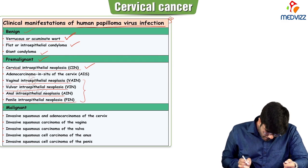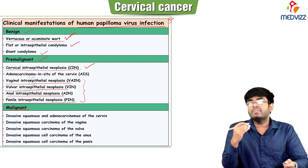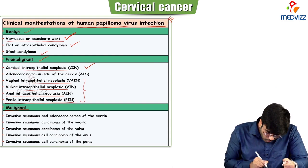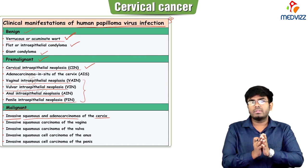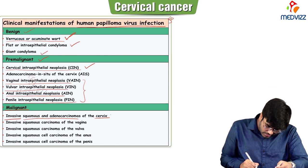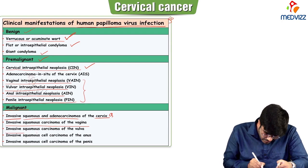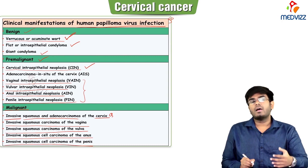For malignant conditions: cervical cancer — invasive squamous and adenocarcinoma of the cervix — is caused by HPV, but not only cervical cancers. Invasive squamous carcinoma of the vagina, invasive cancer of the vulva, invasive cancer of the anus, and invasive cancer of the penis can all be caused by human papillomavirus, which is a very dangerous virus.